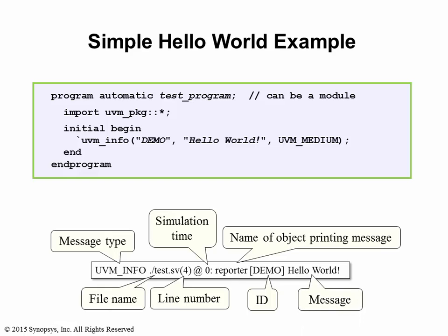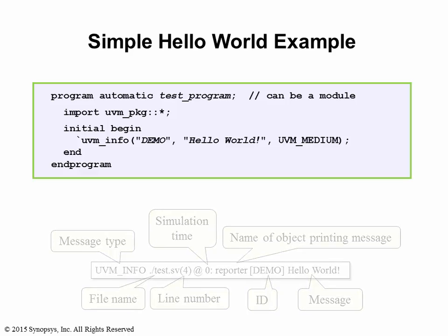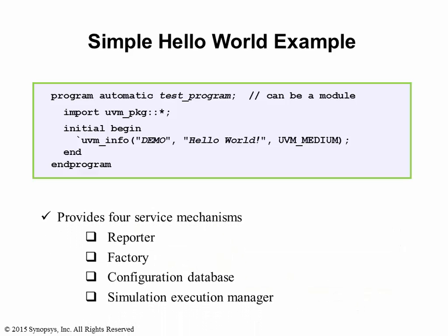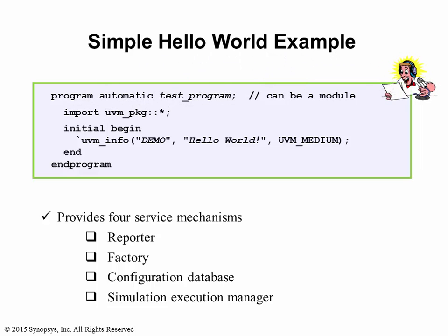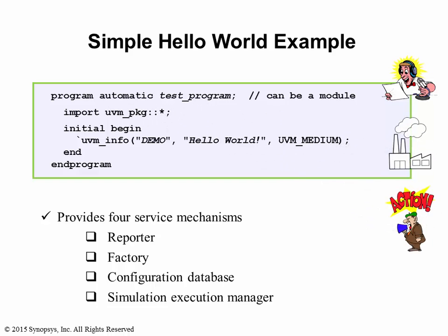So, how does this work? As mentioned earlier, UVM provides four service mechanisms. These service mechanisms are enabled when you import the UVM package. The reporter class name is UVMReportServer. The factory class name is UVMFactory. The UVM Simulation Execution Manager class name is UVMroot.